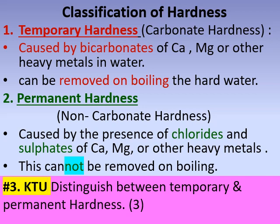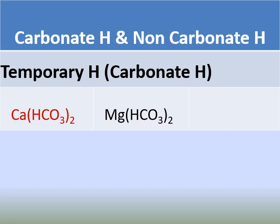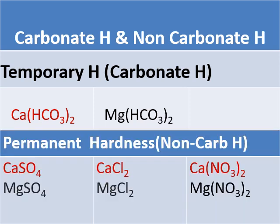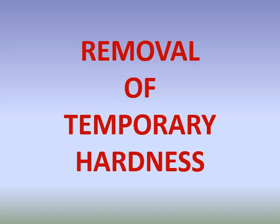This answers the third KTU question: distinguish between temporary and permanent hardness. The hardness-producing salts (HPS) for temporary hardness are bicarbonates of calcium and magnesium. For permanent hardness, the HPS are sulfates of calcium and magnesium, chlorides of calcium and magnesium, and nitrates of calcium and magnesium — or any other heavy metal ions.